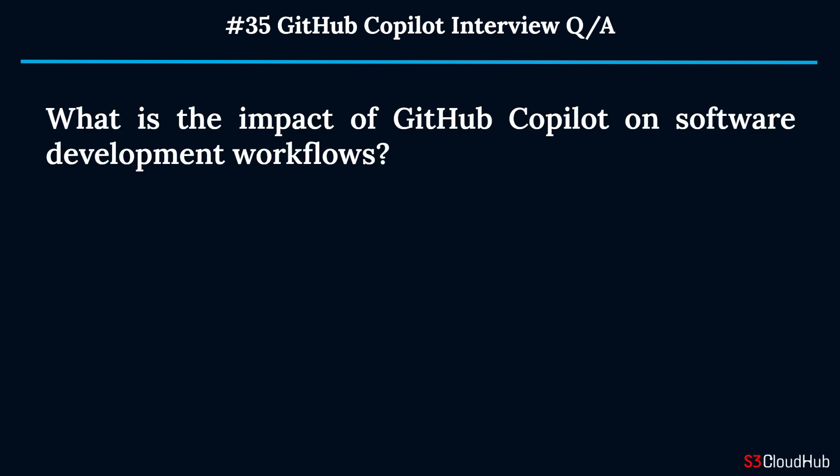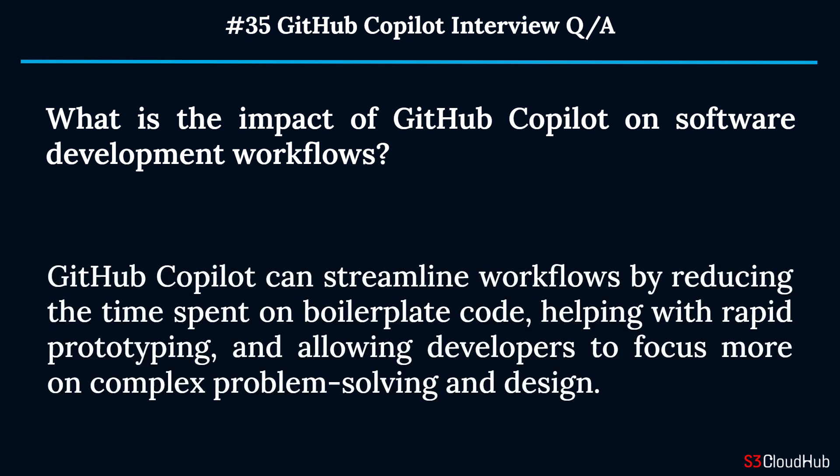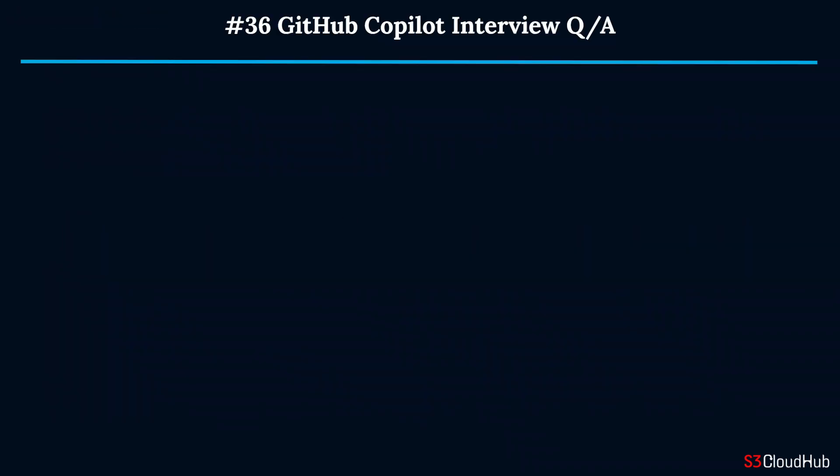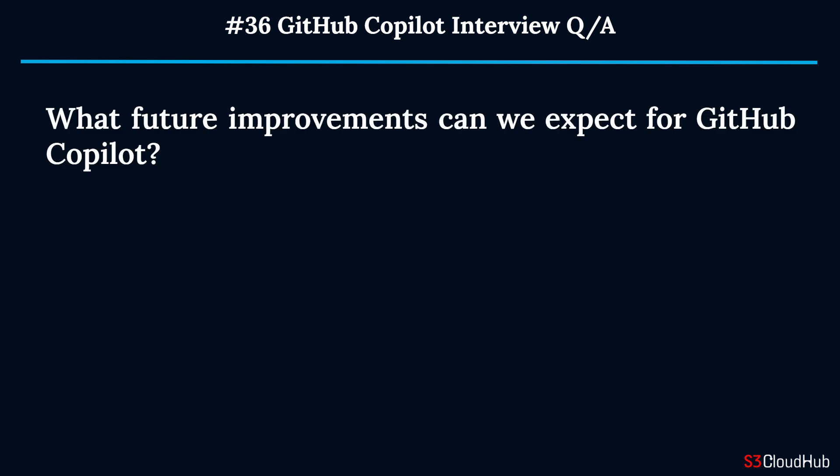Question thirty-five: What is the impact of GitHub Copilot on software development workflows? GitHub Copilot can streamline workflows by reducing the time spent on boilerplate code, helping with rapid prototyping, and allowing developers to focus more on complex problem solving and design. The sixth topic is future and improvements.